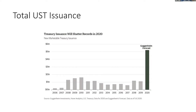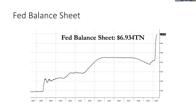Where is the Fed coming into all this? All this issuance of Treasuries is being bought by the Federal Reserve. In the past, if you wanted to issue bonds or IOU notes, you would want investors to buy them. But that's no longer the case. The Fed is monetizing and buying those Treasuries — creating digital currency and putting it into the market, as Powell described in his interview last night.